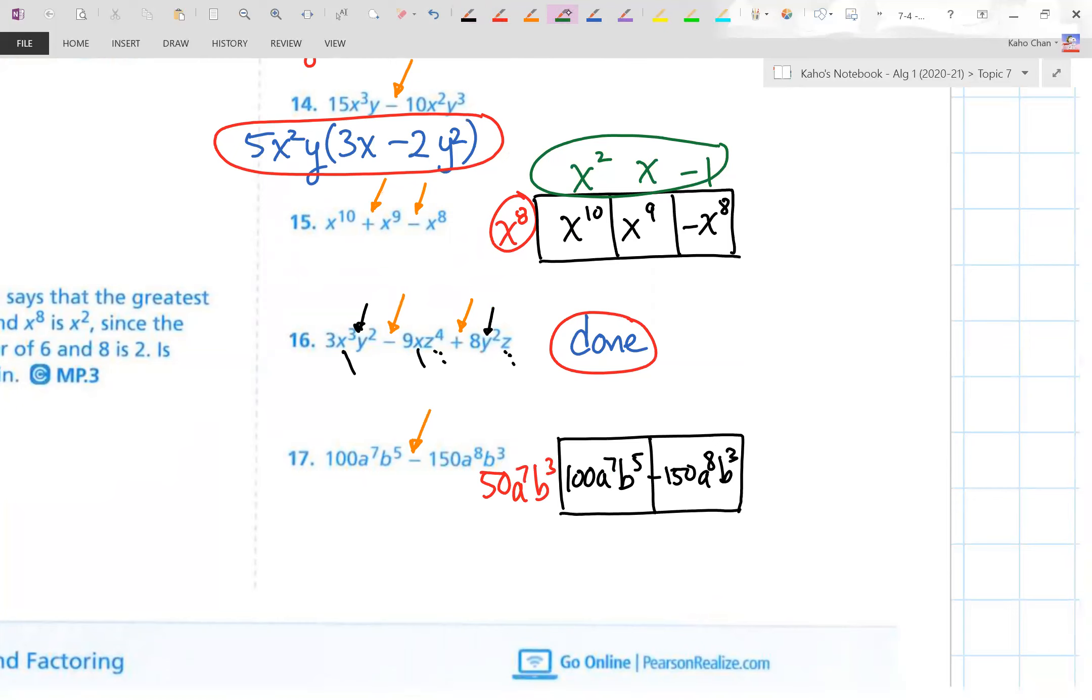So 100 divided by 50 is two. All the a's go away. I'm left with b squared for the first half. Second half minus. Watch out for that negative sign there. 150 divided by 50 is three. All the a's go away except a single a. And all the b's do go away. And ladies and gentlemen, there's my factored form.